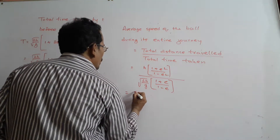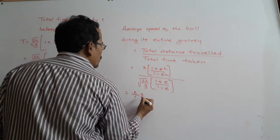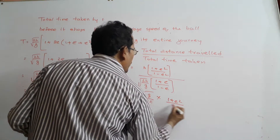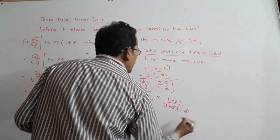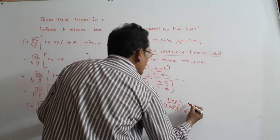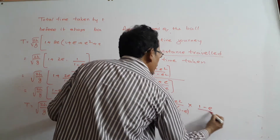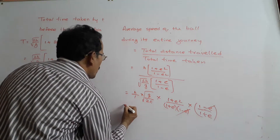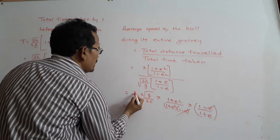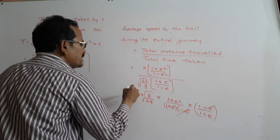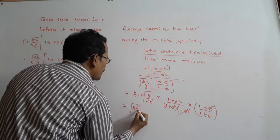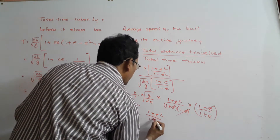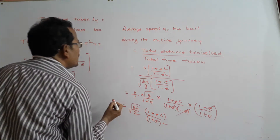Dividing total distance by total time: average speed equals H times the square root of g by 2H, times (1 plus e²) divided by (1 plus e) times (1 minus e), then divided by (1 minus e) by (1 plus e). Since 1 minus e² equals (1 plus e)(1 minus e), the (1 minus e) terms cancel. The result simplifies to the square root of gH by 2 times (1 plus e²) divided by (1 plus e)². This is the average speed.